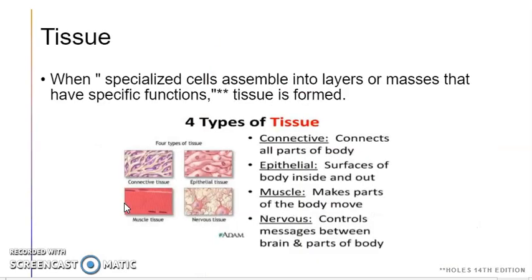The next level covers tissue — and we are not speaking of tissue such as Kleenex, Cottonelle, Charmin, nor Puffs. When I refer to tissue, I'm speaking of the specialized cells that have special functions. We have four types of tissue within our body: connective, epithelial, muscle, and nervous.